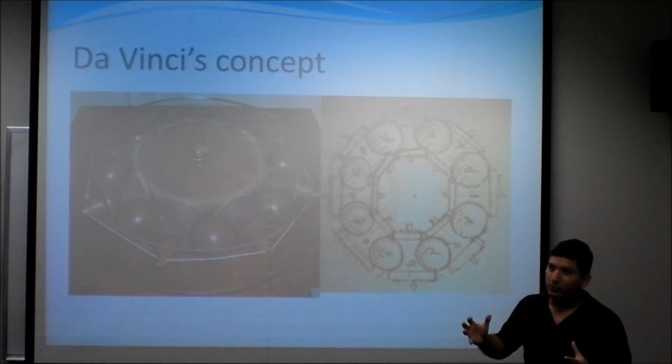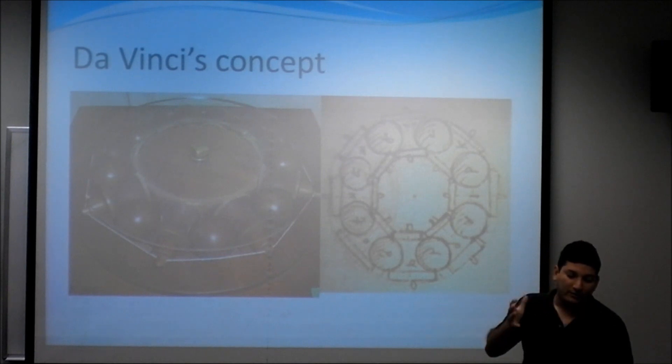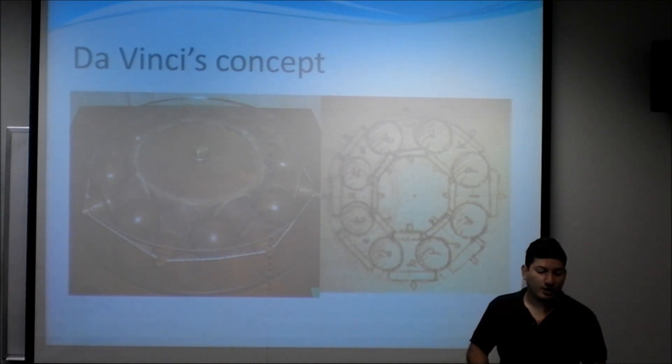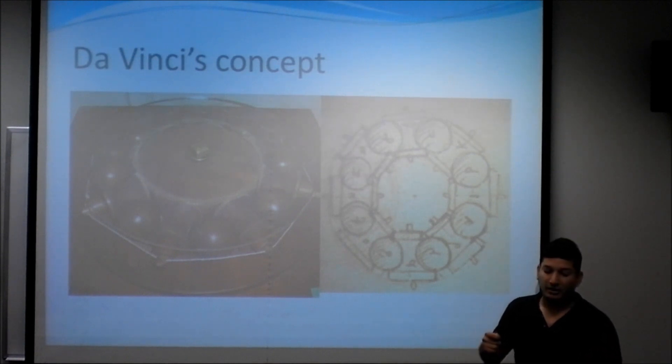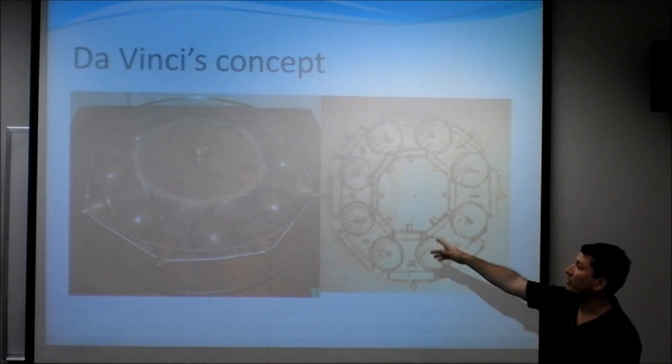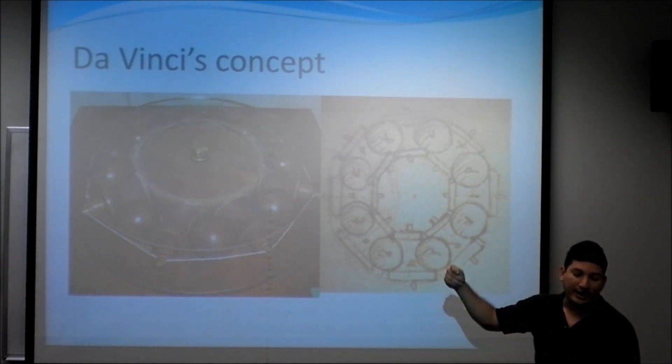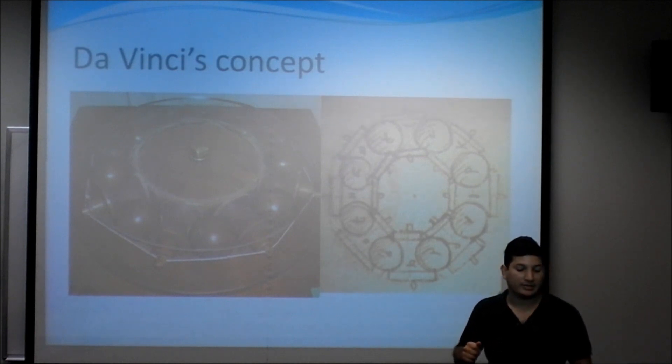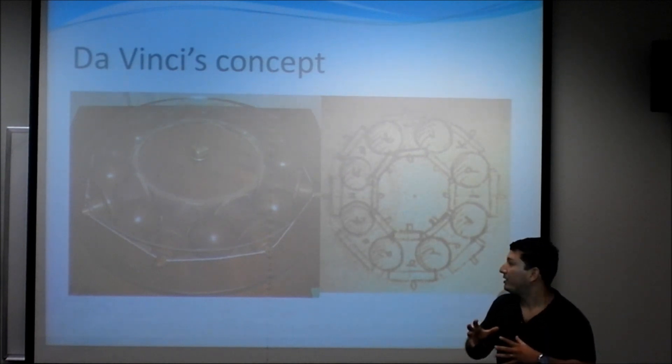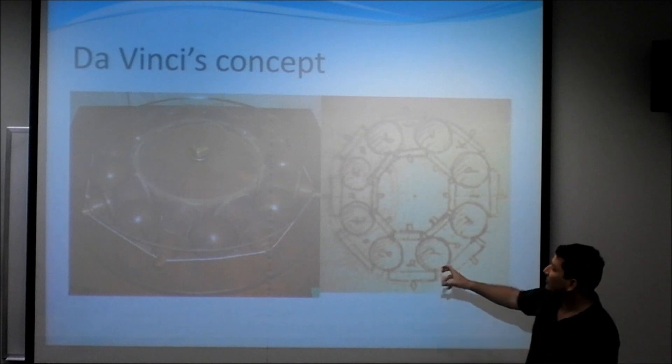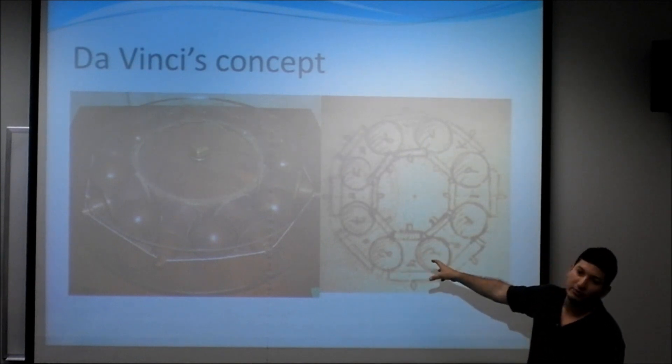The first roller bearings that were found were in 40 BC. Romans used it in turntables. And then in the 15th century, Leonardo da Vinci had a design, which we see here, and used it on a helicopter design. In the 16th century, Gallaudel described the first cage ball bearings design, which decreased friction and kept the rolling elements from contact with each other.